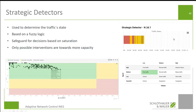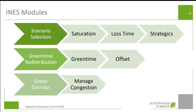So those are the first two steps: saturation — looking at green times — and lost time — also looking at the coordination. Now, strategics: what is that? As mentioned, we look at the combination of speed and volume. For example, a plot with speed on the y-axis and volumes on the x-axis — sometimes dots come down to low speeds at the same volume, meaning congestion. The combination of these two values tells us if we have congestion. These strategic detectors are placed within the project phase at locations where we expect congestion to happen.